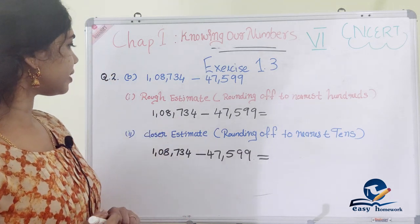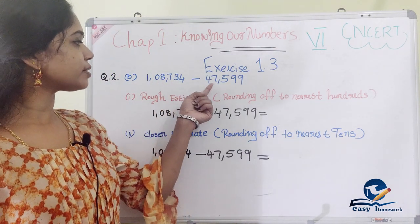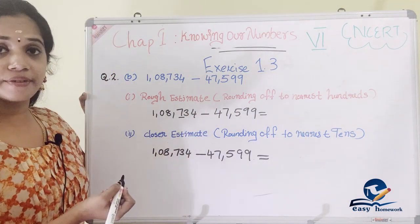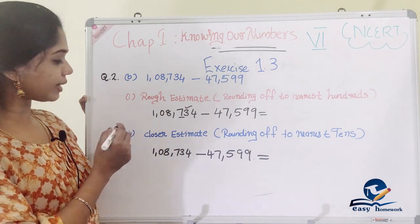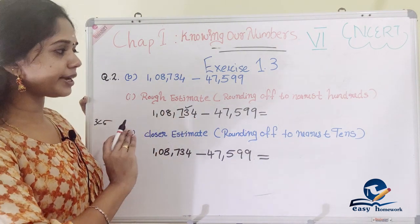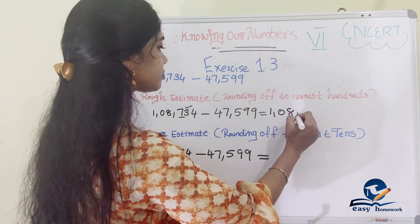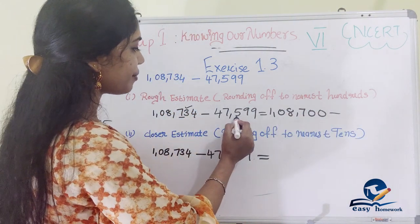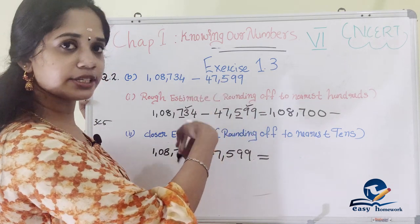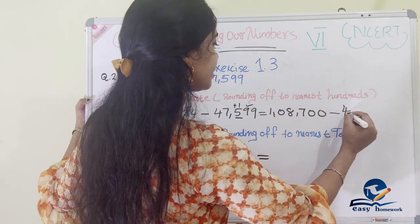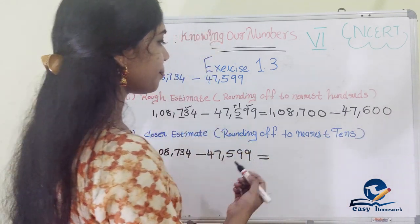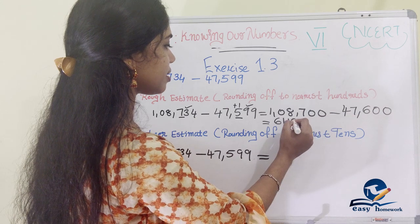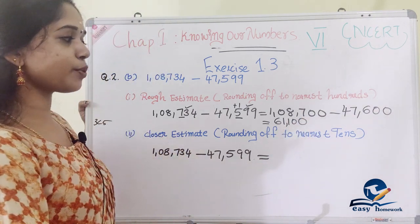The second question is 1,08,734 minus 47,599. We'll do the nearest hundreds round off. In the hundreds position of 1,08,734 the digit is 7, and in the third position is 3 — since 3 is less than 5, we round down to 1,08,700. For 47,599, the hundreds digit position gives 9, which is greater than 5, so we round up to 47,600. The answer is 61,100.